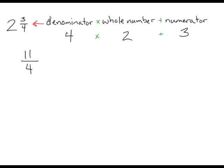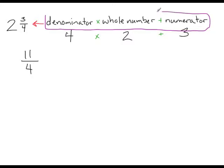This is something you will want to write down and commit to memory, because you will need to use this later. The denominator times the whole number plus the numerator gives us the numerator of our improper fraction.